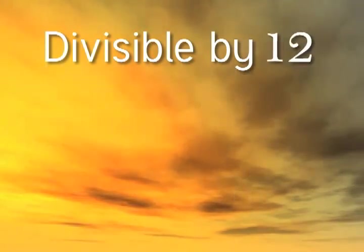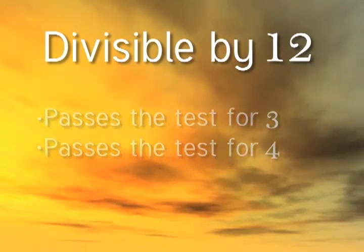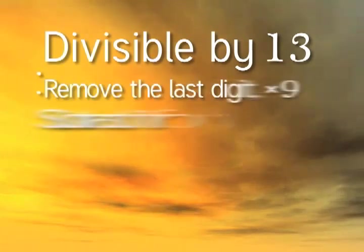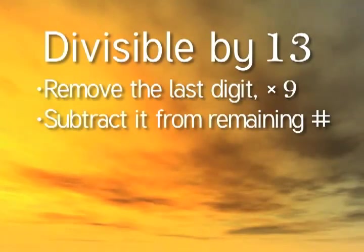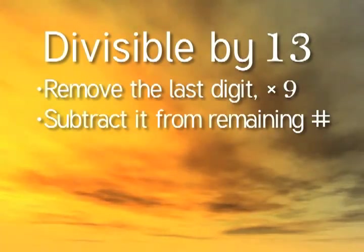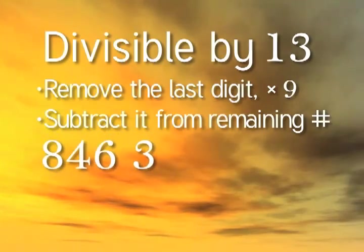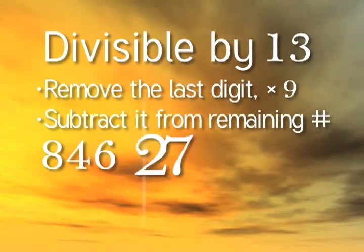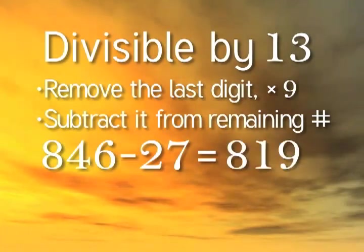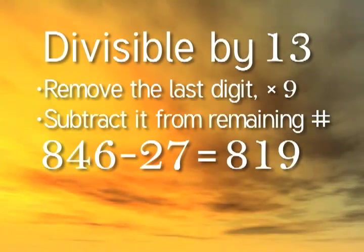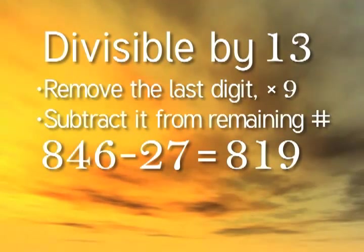A number is divisible by 12 if it passes the divisibility test for 3 and 4. Here's the test for 13. Remove the last digit from the number. Subtract 9 times the removed number from the remaining number. For example, 8,463. Remove the 3 and multiply it times 9, and you get 27. The remaining number, 846, minus 27, is 819. 819 is divisible by 13, so the original number passes this divisibility test.